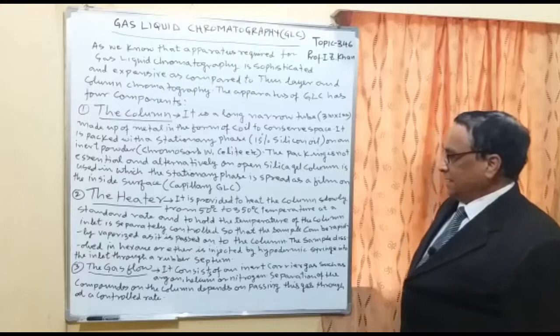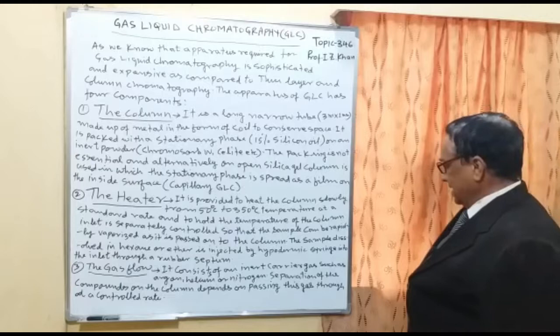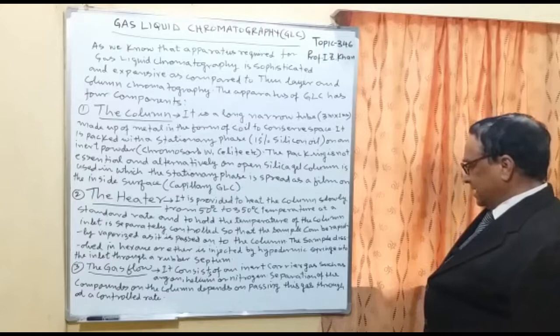Component number three is the gas flow. It consists of an inert carrier gas such as argon, helium, or nitrogen. The separation of compounds on the column depends on passing this carrier gas through a controlled flow rate.